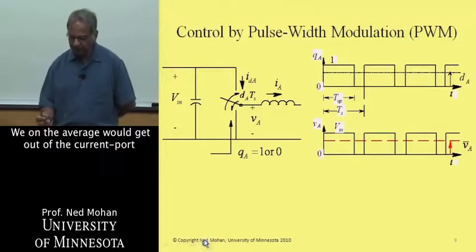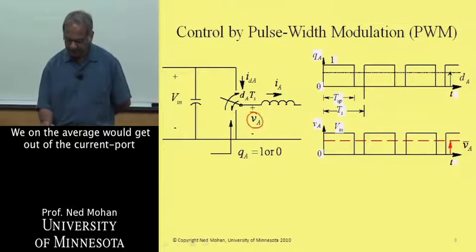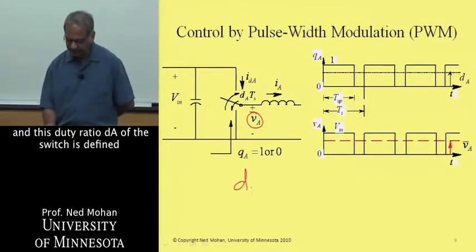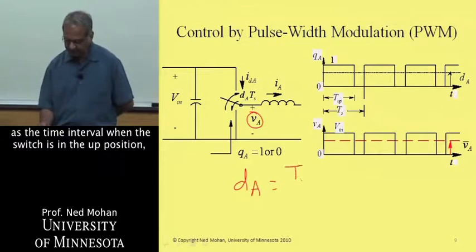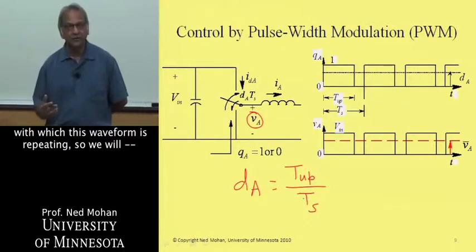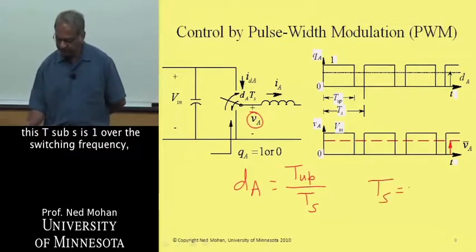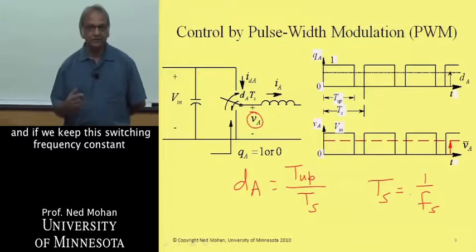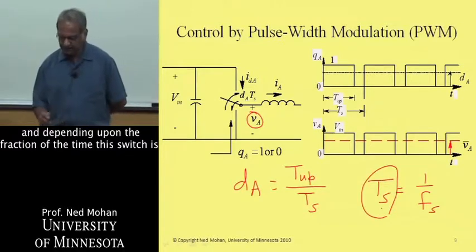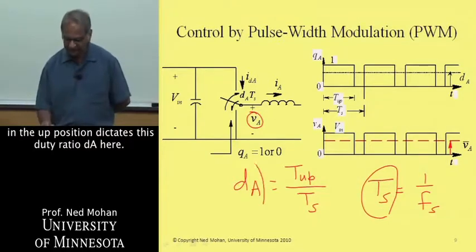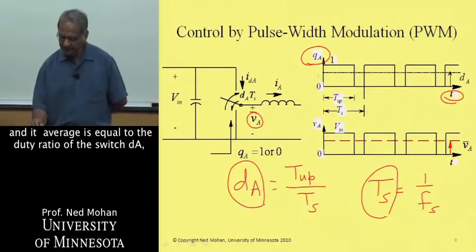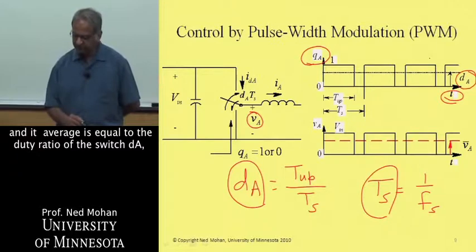And the control over what we, on the average, would get out at the current port over here is dictated by this duty ratio dA, and this duty ratio dA of the switch is defined as the time interval when the switch is in the up position divided by the time period T sub S with which this waveform is repeating. So this T sub S is 1 over the switching frequency, and if we keep the switching frequency constant, then this switching time period is constant as well, and depending upon the fraction of the time the switch is in the up position dictates this duty ratio dA here. So that's what is shown here. This switching signal is plotted as a function of time, and its average is equal to the duty ratio of the switch, dA. Sometimes it's called duty cycle.